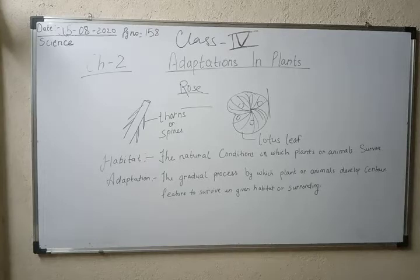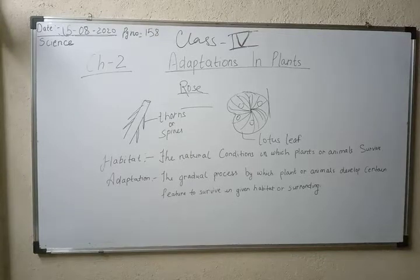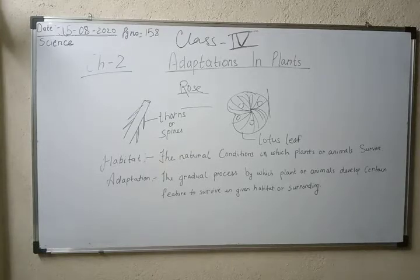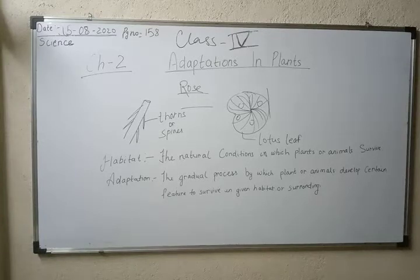For the first fill-in-the-blank, you can write 'rose plant' — it has thorns which protect it from grazing animals. The second blank reads: 'This is a leaf of a dash plant. It is broad and thin. This helps it to dash on the water.' A very common example here is the lotus leaf. You can write 'lotus' — it is broad and thin, and this helps it to float in the water.